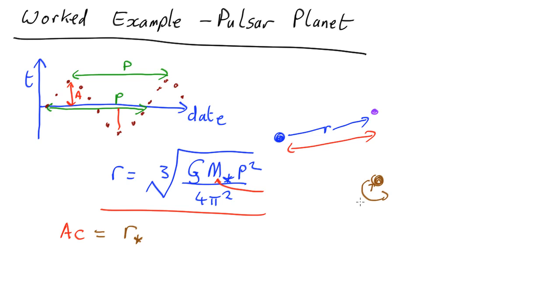But if the orbit is tilted, so let's say for example the Earth is over here, that's us looking, and it's going something like that, then the distance it's moving back and forth is not r_star but r_star sine of the inclination angle. So that's what we really know: the amplitude times c is r_star sin i.